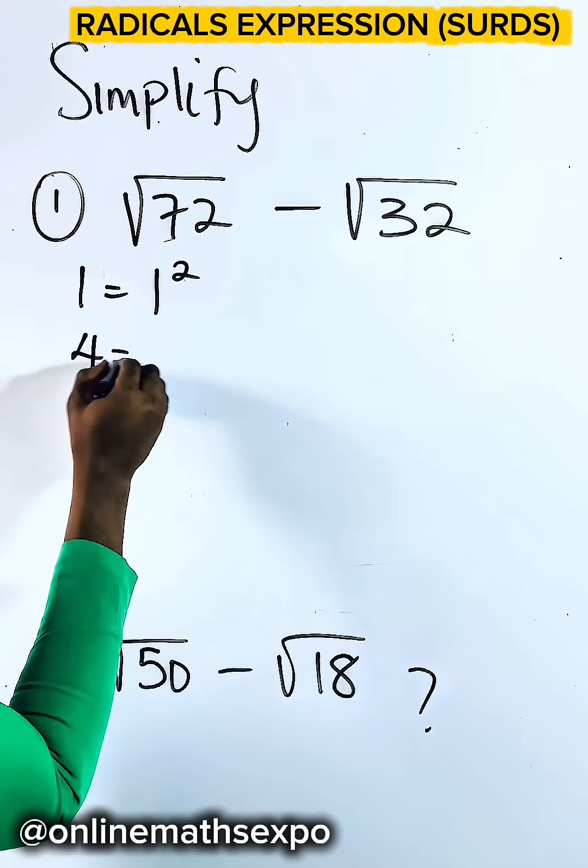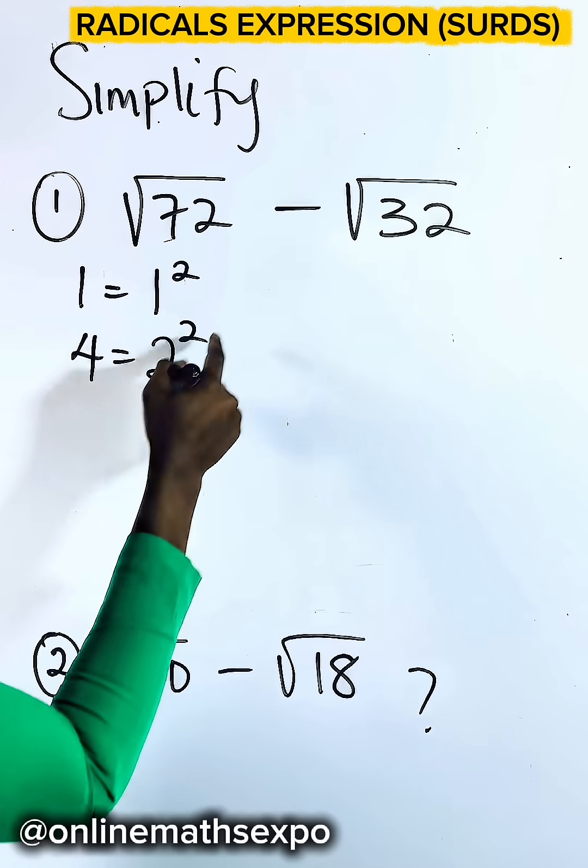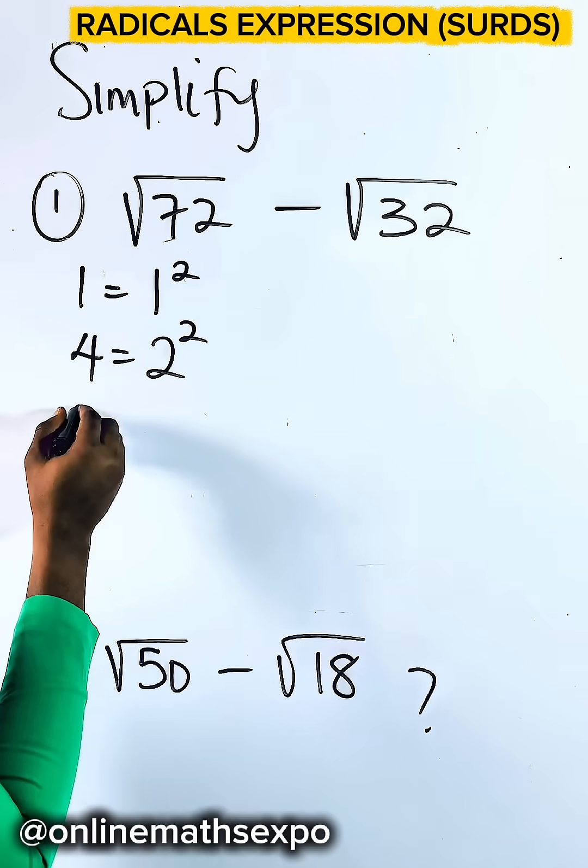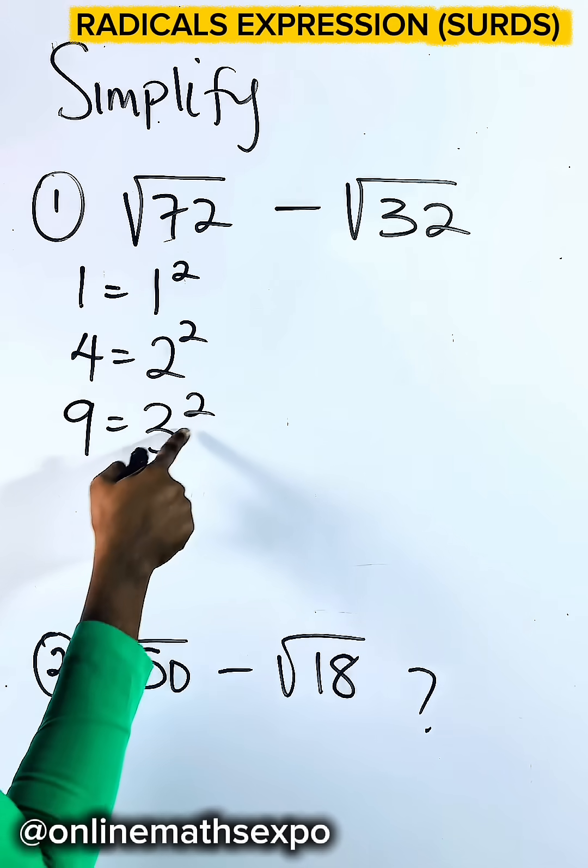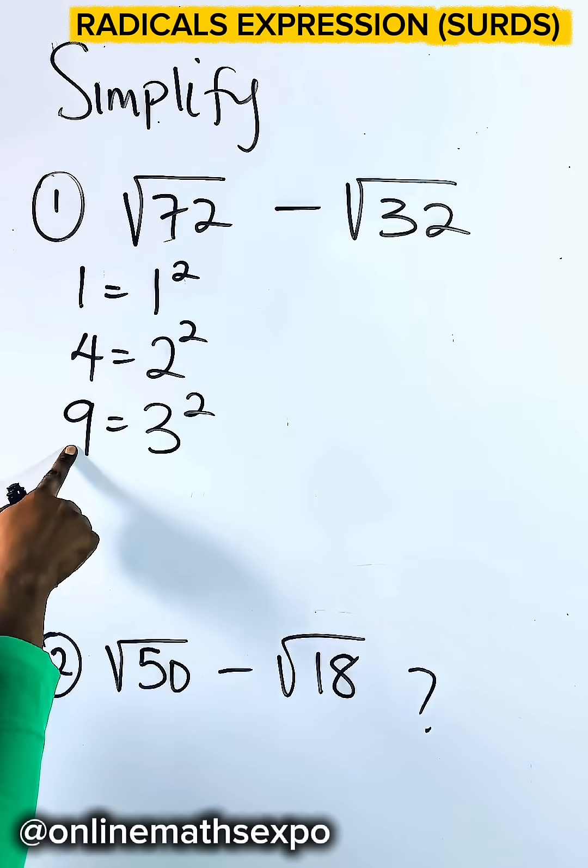4 is a square number because it equals 2 squared, 2 multiplied 2 times. 9 is a square number because 3 raised to power 2 is 3 multiplied 2 times to give you 9.